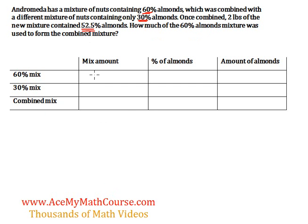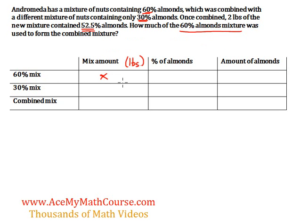The question is asking: how much of the 60% almonds mixture was used to form the combined mixture? I'm going to put an X in the mix amount column — the units here will be pounds. So X pounds of the 60% mixture goes right here.